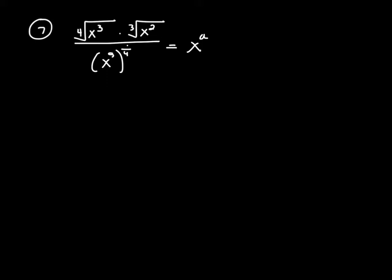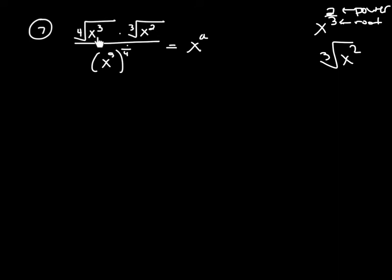For example, if you have x to the 2/3 power, the numerator always represents the power and the denominator represents the root — we say power over root. So this would be the cubed root of x to the second power. With that in mind, this is going to be our power and this is going to be our root, so we can rewrite it as x to the 3/4 power.